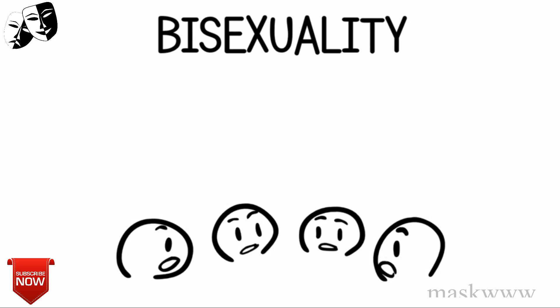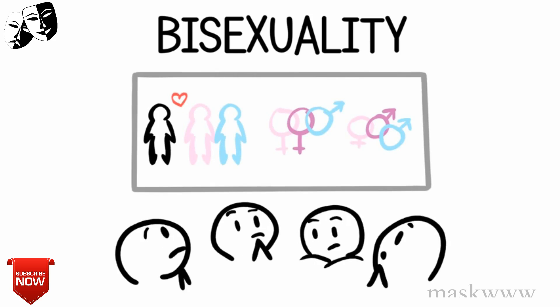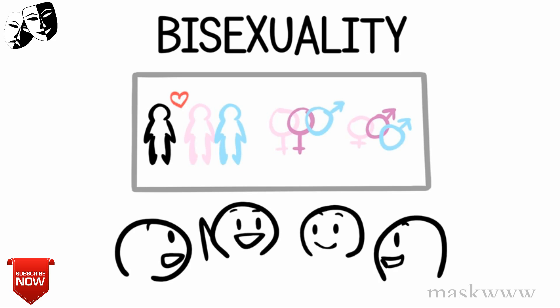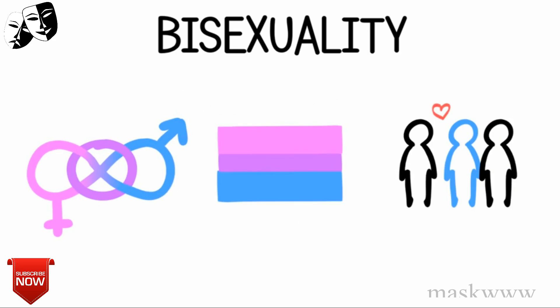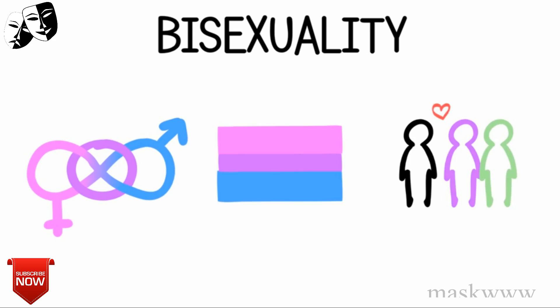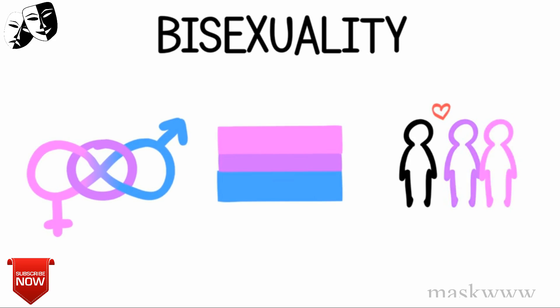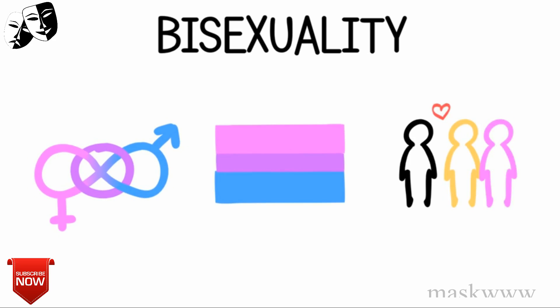1. Bisexuality. The definition for bisexuality is actually something that's debated. Originally, the standard definition was attraction to both genders. However, as understanding of gender has evolved, people have argued for an evolved definition of bisexuality. Some use the definition of attraction to your own and other genders to incorporate non-binary genders within its definition. Some famous examples of people who are bisexual are Brendon Urie from the band Panic at the Disco and actress Angelina Jolie.